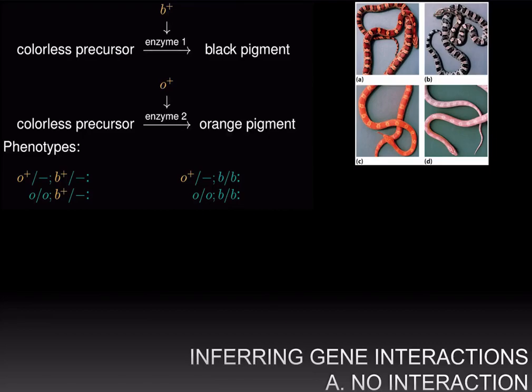Most traits or phenotypes are controlled by multiple genes. In the algorithm that geneticists employ to determine how multiple genes control traits, there are three steps. In the first step, you generate or isolate many mutant strains. In the second step, you cross the mutant strains with each other — in other words, you perform complementation — to determine whether the strains are mutant for different genes or for the same genes.